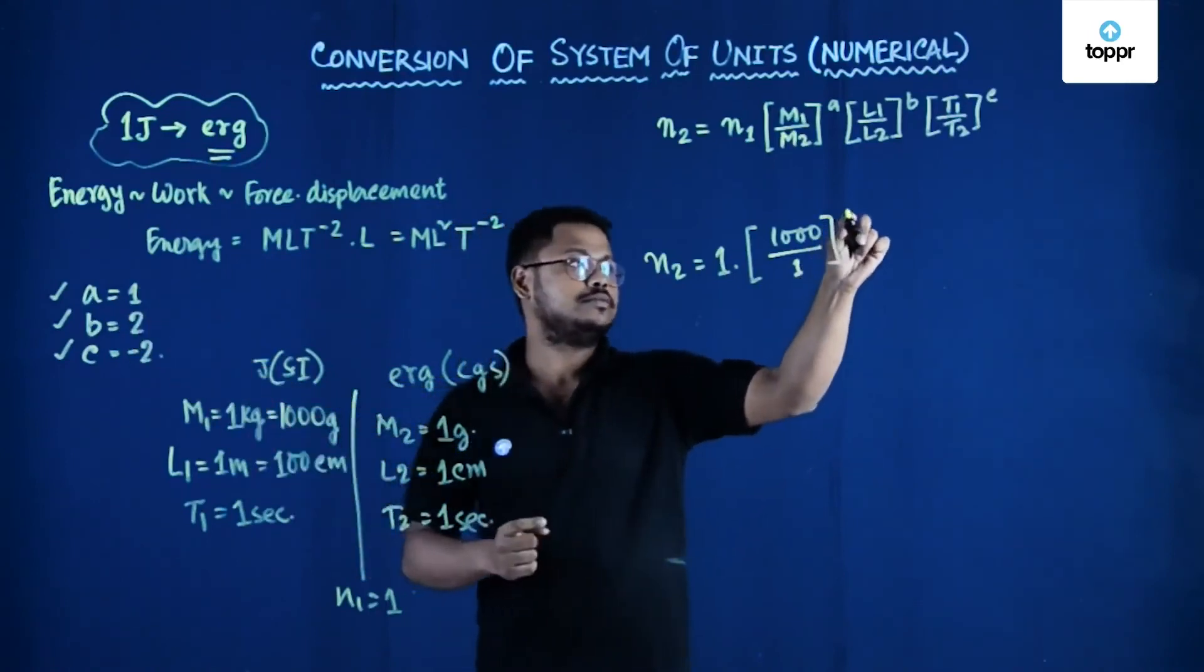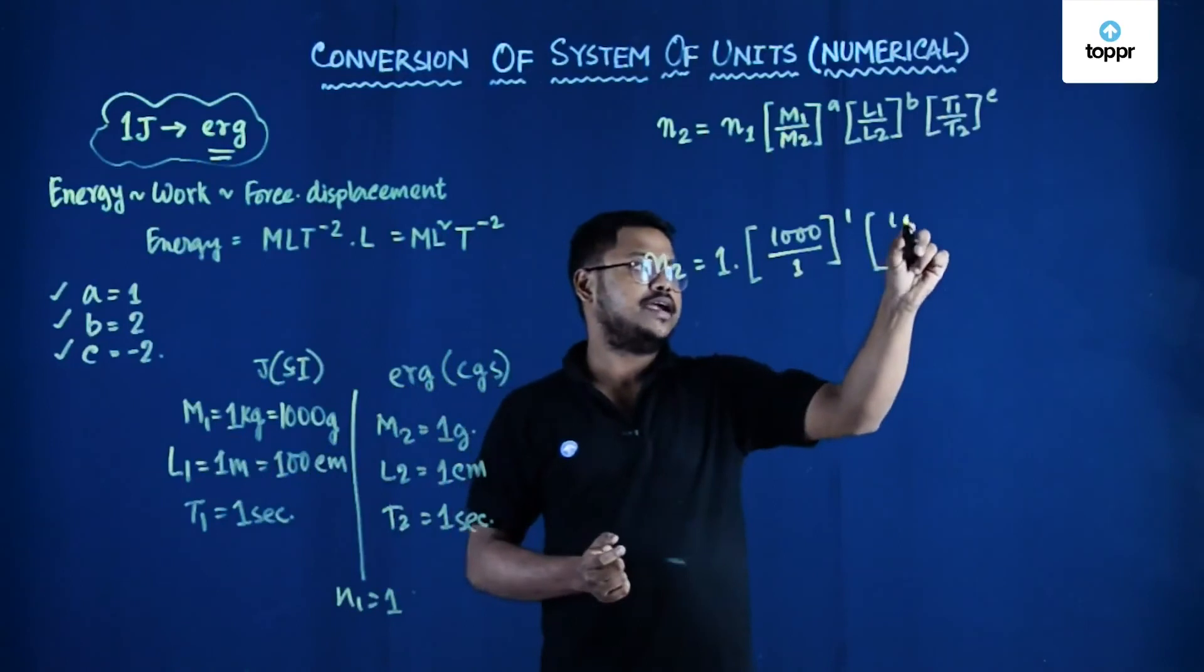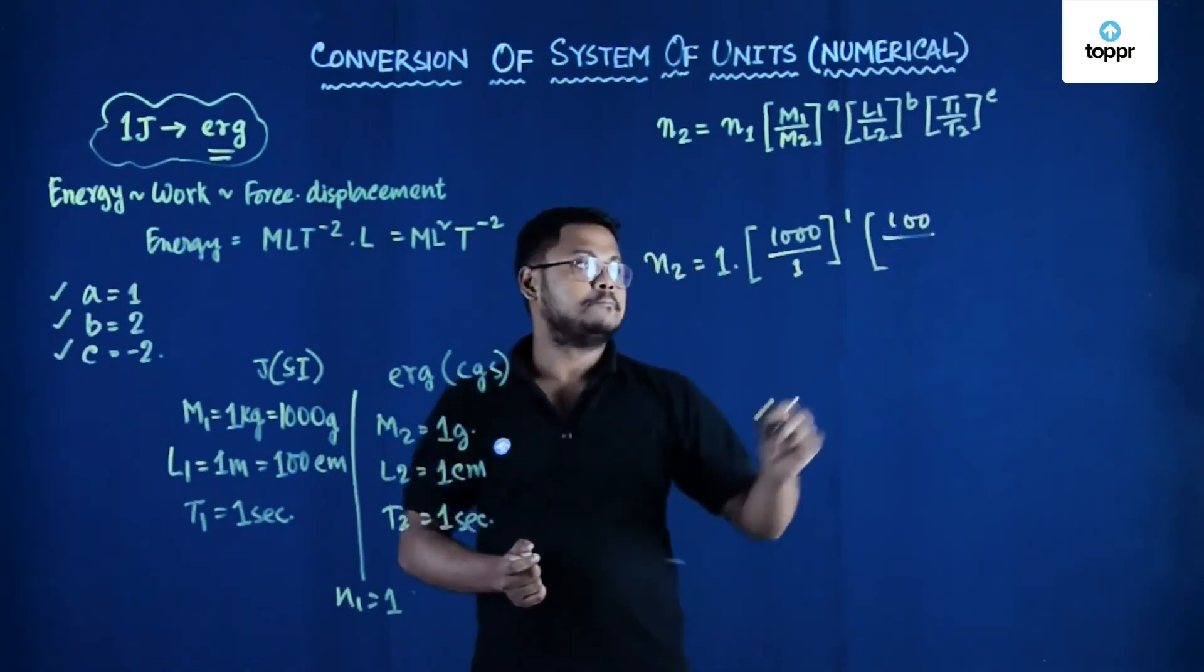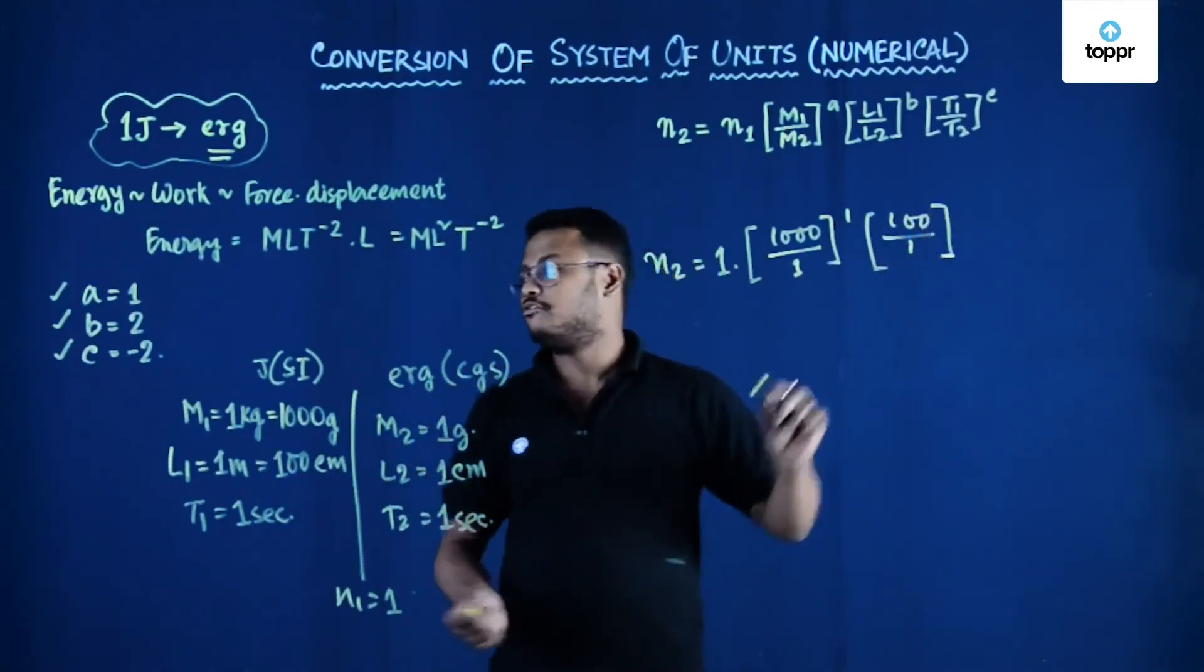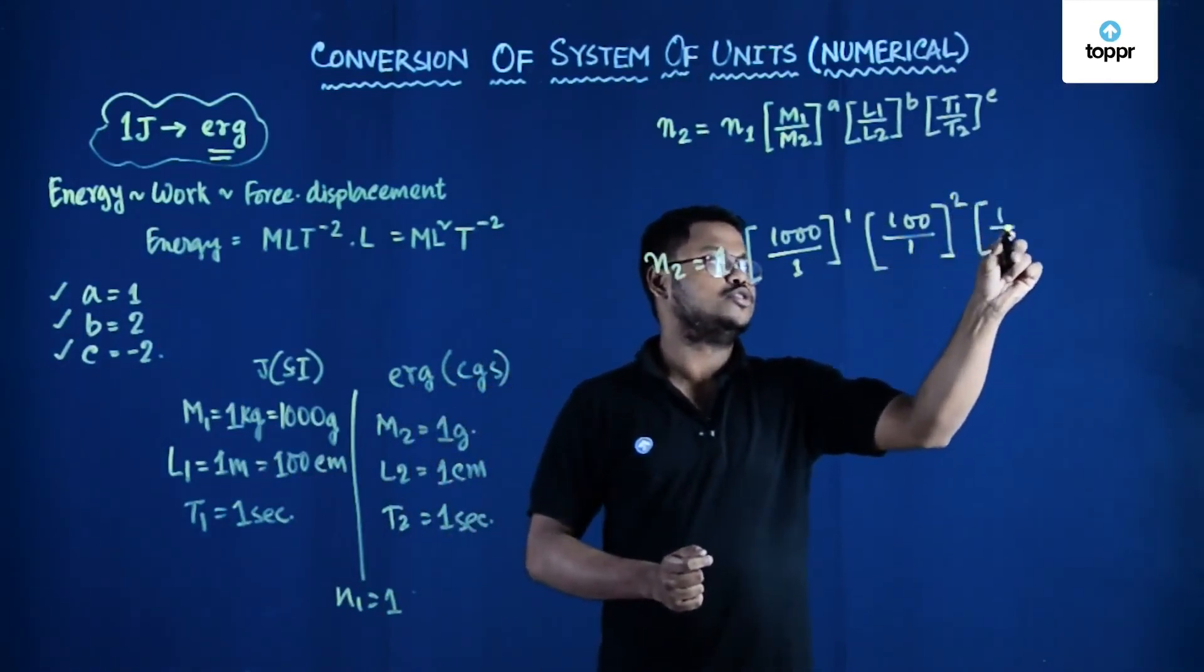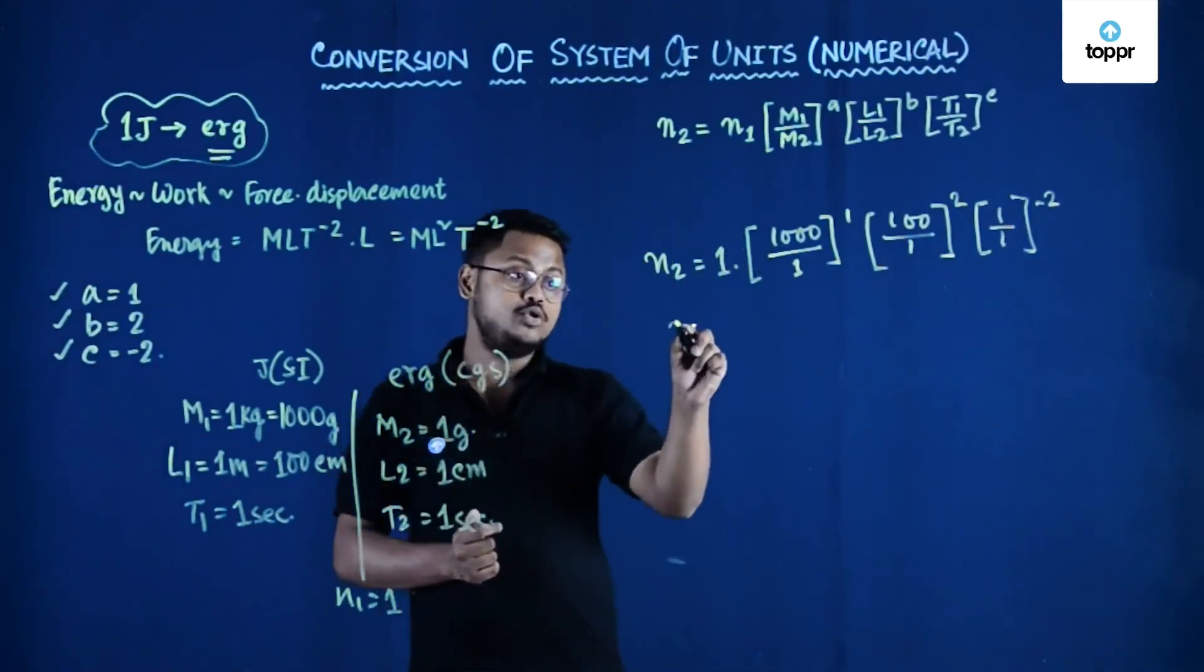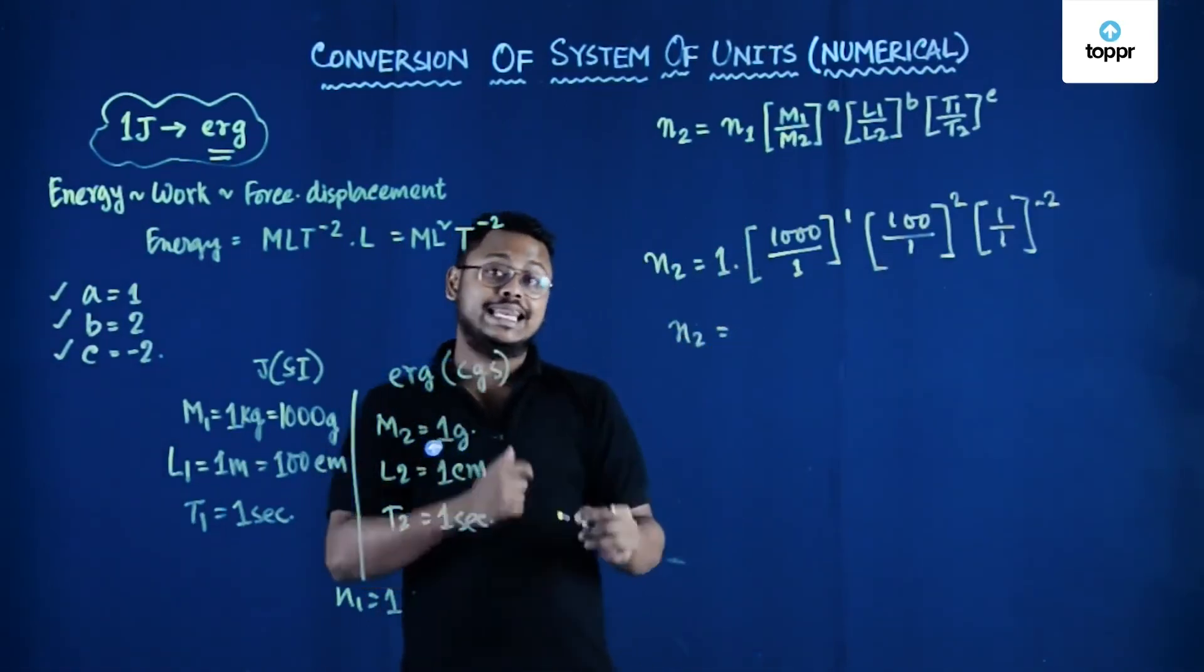the value of a is 1, into l1 that is 100 upon 1 and the value of b is 2, and t1 is t2 both 1 and its value is minus 2. So n2, the value of numerical value in new,